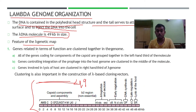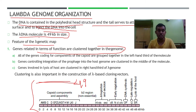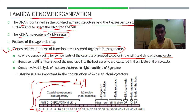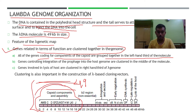The lambda genetic map has genes related in function clustered together. There are three distinct regions. The first is the capsid component genes: all genes encoding components of the capsid are grouped together in the left-hand third of the molecule, named A, W, B, C, D, and so on, as you can see in the diagram.